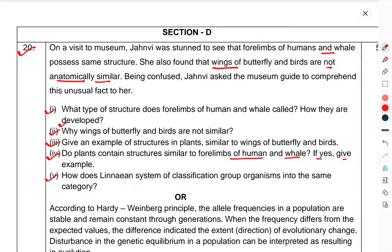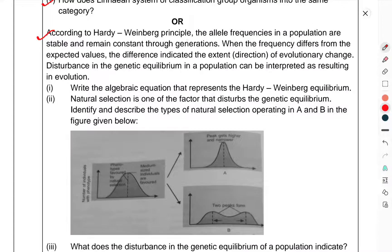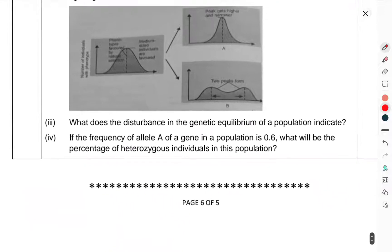How does the Linnaean system of classification group organisms into the same category? OR: According to the Hardy-Weinberg principle, allele frequencies in a population remain stable and constant across generations. When the frequency differs from the expected value, the difference indicates the extent of evolutionary change. Disturbance in the genetic equilibrium in a population can be interpreted as resulting in evolution. Write the algebraic equation that represents Hardy-Weinberg equilibrium. Natural selection is one of the factors that disturbs the genetic equilibrium. Identify and describe the types of natural selection operating in figures a and b given below.